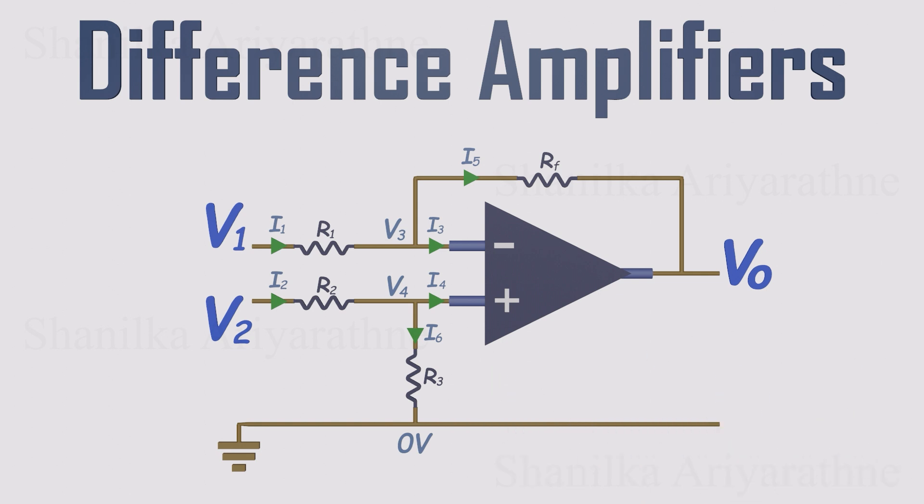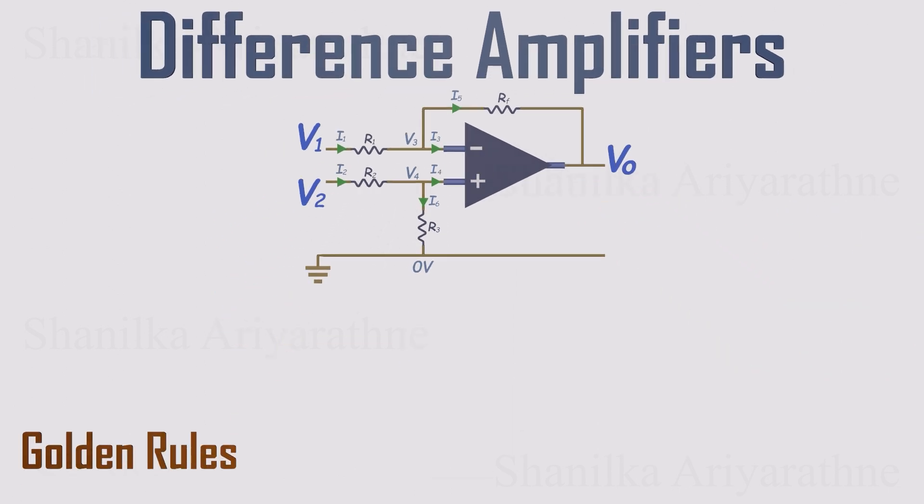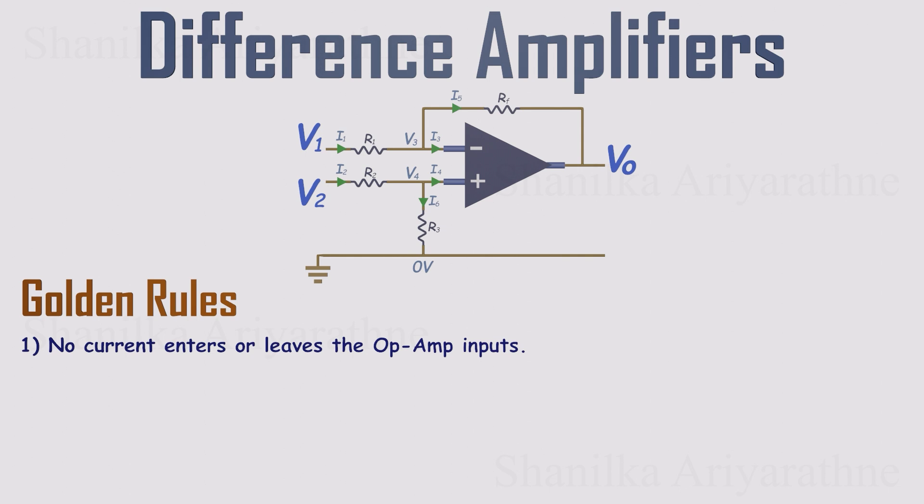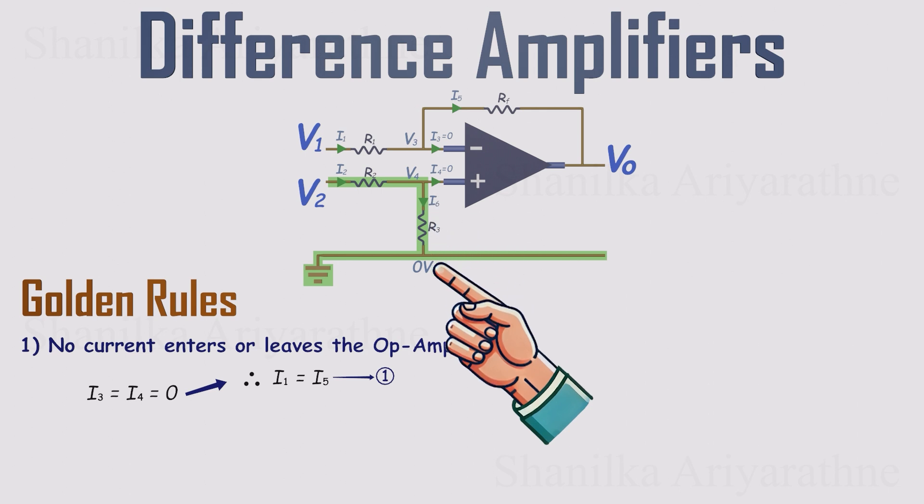Now we can move into the analysis in a few crisp steps. Because this circuit uses negative feedback, the golden rules apply. Rule 1: No current flows into the op-amp inputs. That means I3 and I4 are both 0. So, the current coming through resistor R1 has nowhere else to go. It must flow through the feedback path RF. That gives us our first equation. I1 equals I5. On the non-inverting side, the current through resistor R3 also has nowhere else to go, except down through the resistor to ground. So, I2 equals I6. That's our second equation.